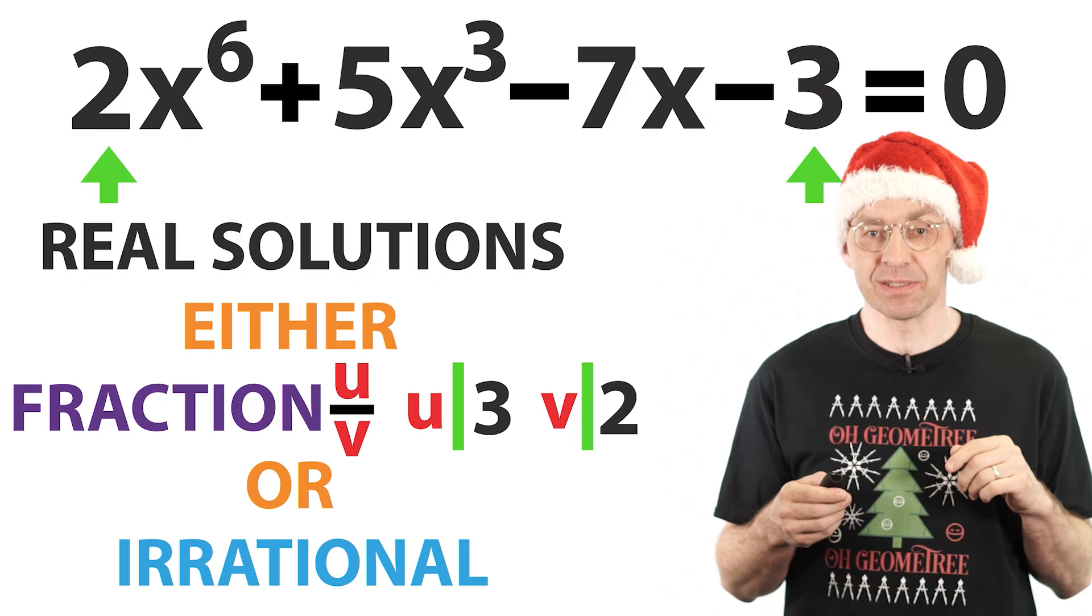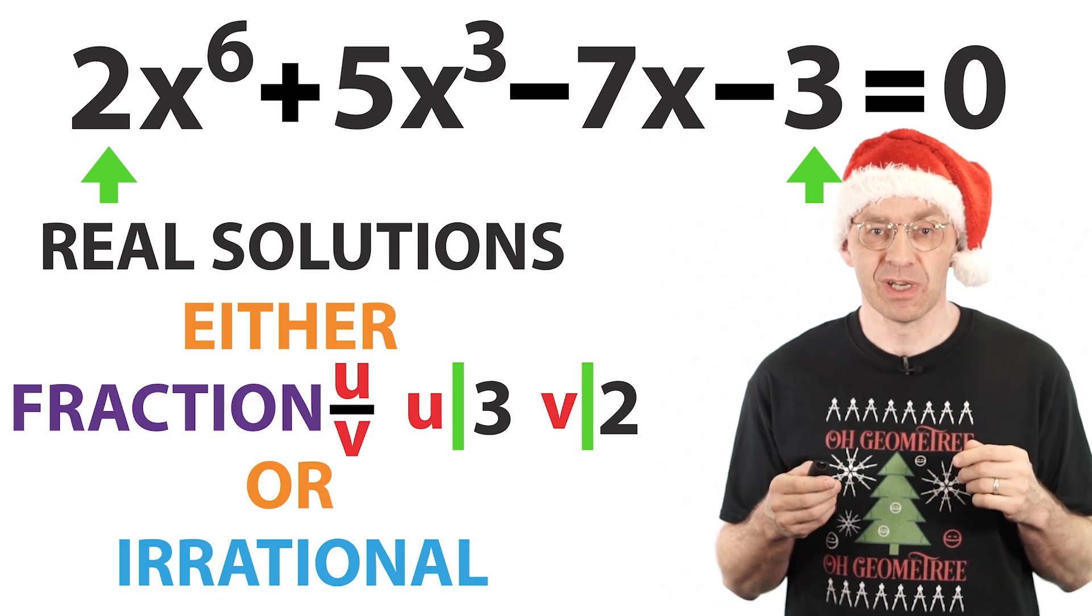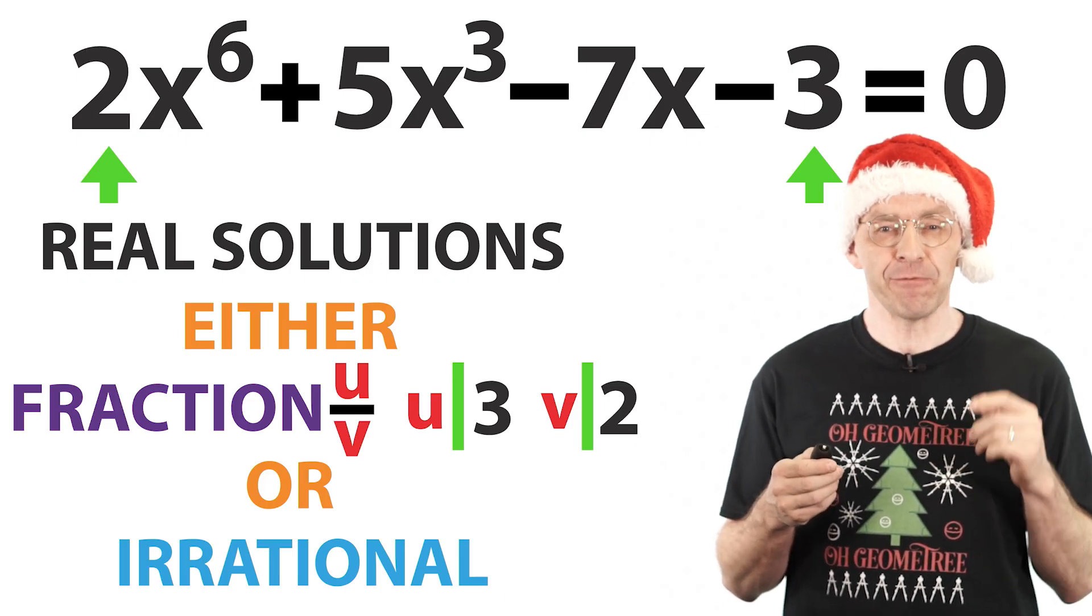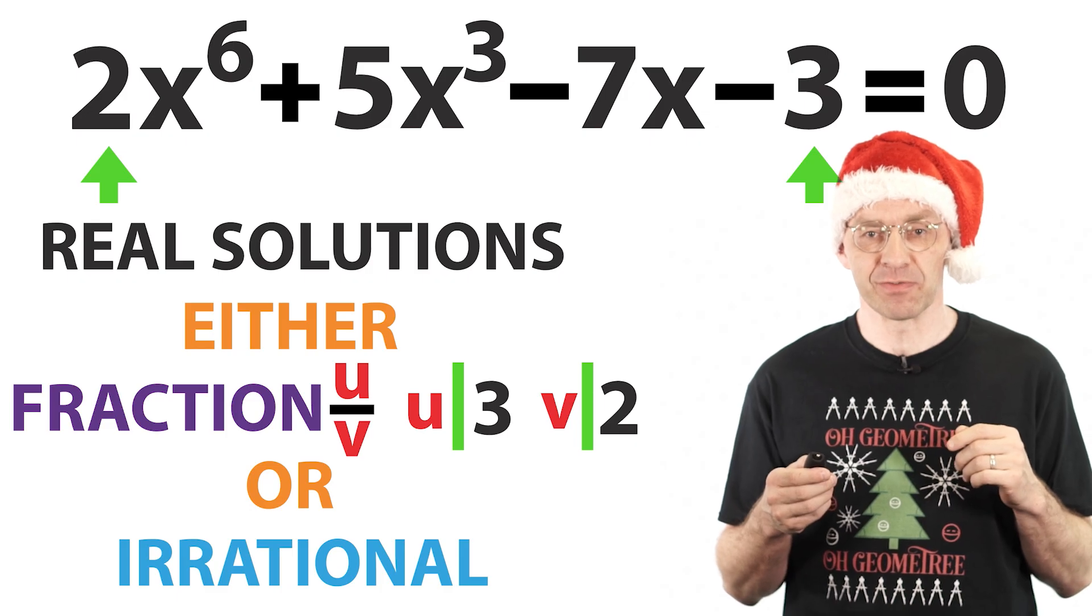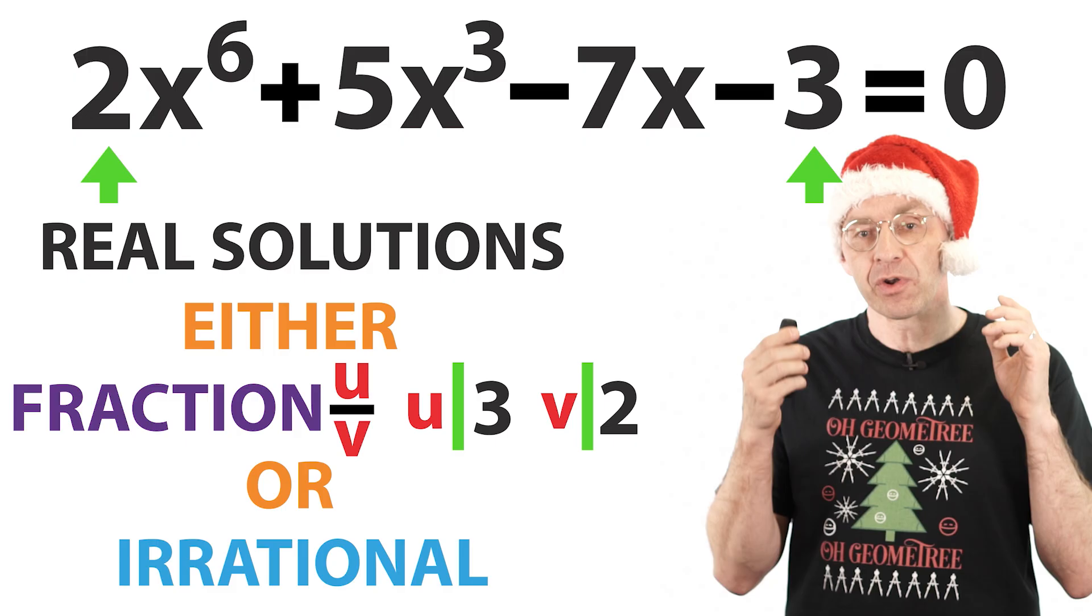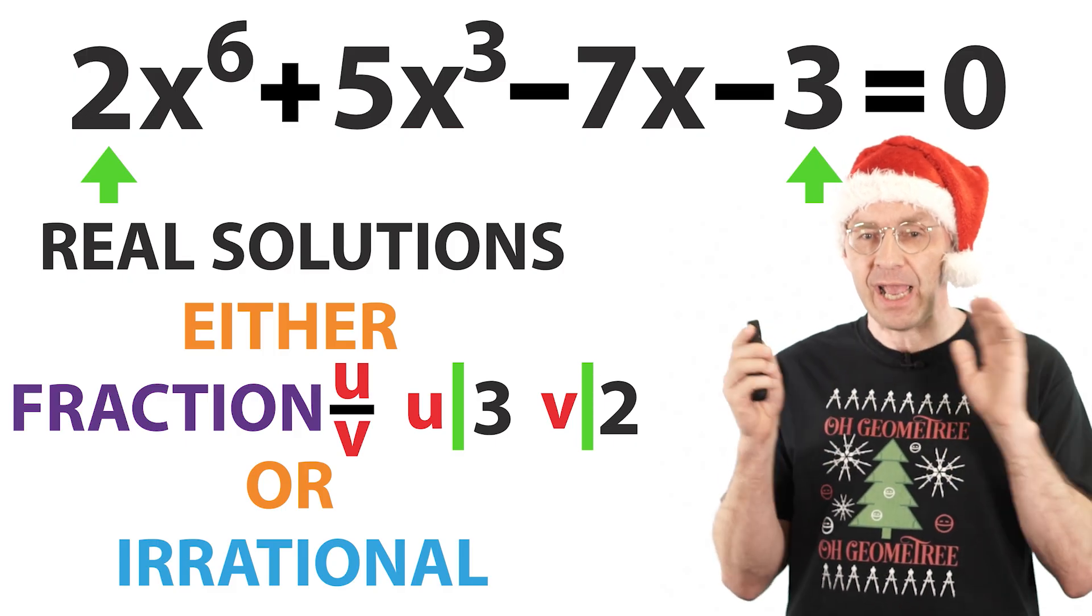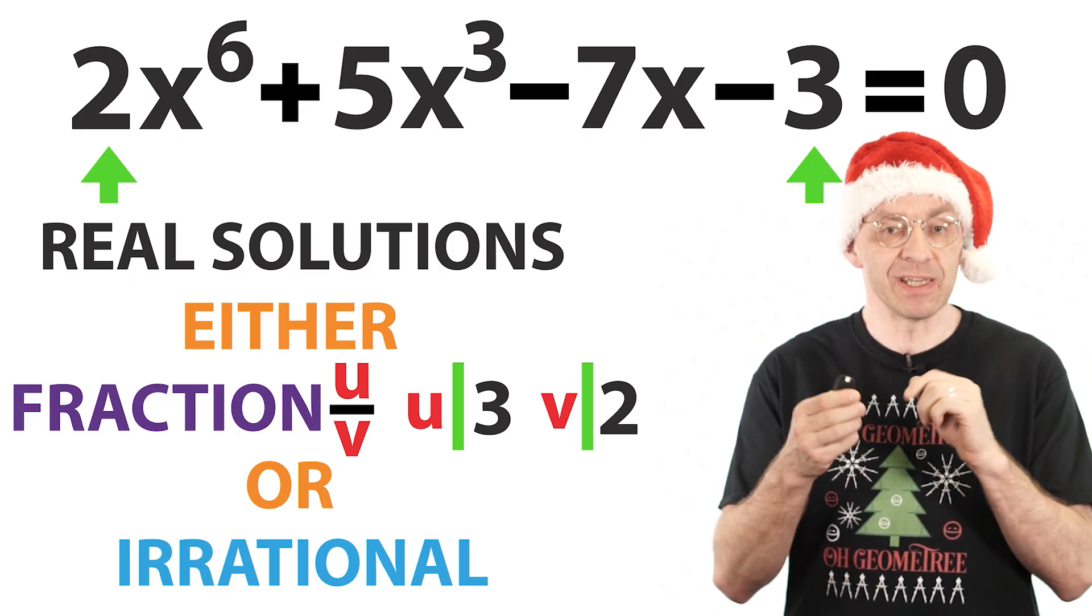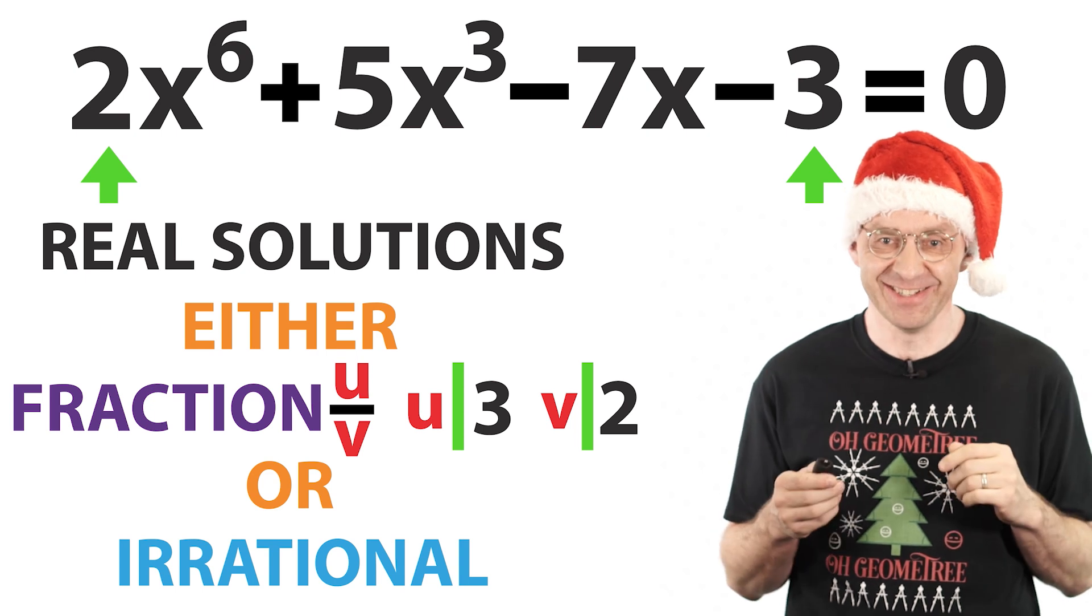To turn the statement of the integral root theorem into the rational root theorem, we simply have to replace the integer dividing the constant term by a fraction u over v with u dividing the constant term, and v dividing the leading coefficient. This means that in practice, and just as before, we can easily determine the very few candidates for rational solutions of an equation like this, and by doing so, we will have automatically proved that any other real solution must be irrational. Cool, huh?